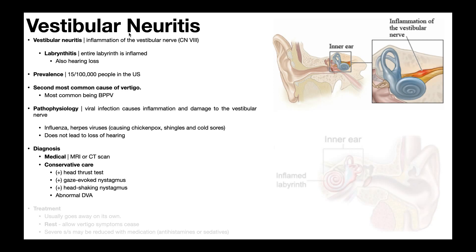In the case of vestibular neuritis: there's no hearing loss, no tinnitus, no ringing in the ears. You're going to have a negative Dix-Hallpike and negative horizontal roll tests. You'll have normal central tests in the oculomotor exam, and then positive or abnormal peripheral tests. A big clue is if the patient had a recent illness caused by a virus — particularly influenza or herpes-class viruses, those causing chicken pox, shingles, and cold sores. A recent infection by one of these viruses makes vestibular neuritis much more likely, because those viruses are the cause of that inflammation to the vestibular nerve.